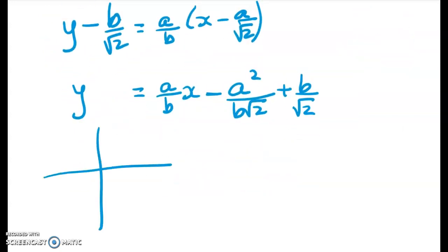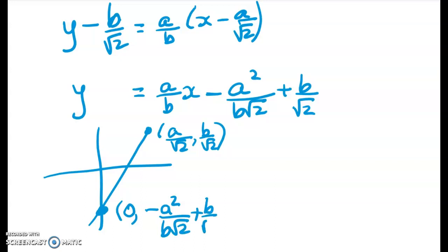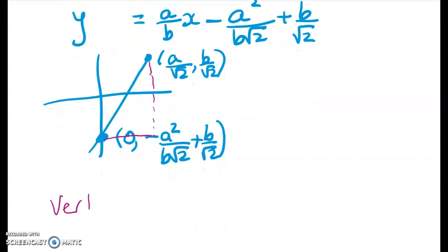Well, here's my normal line. Whoosh. And here's point P up here. So this point here, P, is at a on root 2, b on root 2. And this point here is at x equals 0 and negative a squared over that, this b on root 2. So if we look at this now, and I'm going to draw in a triangle in here.